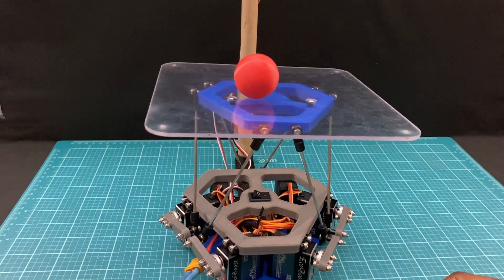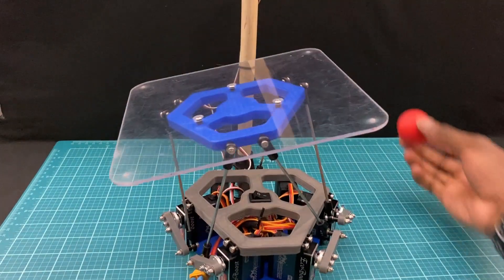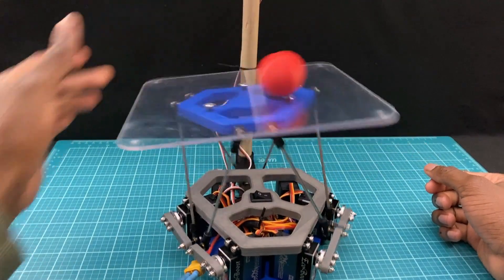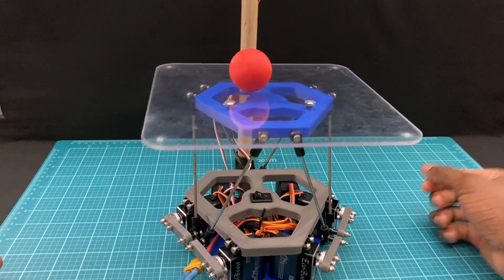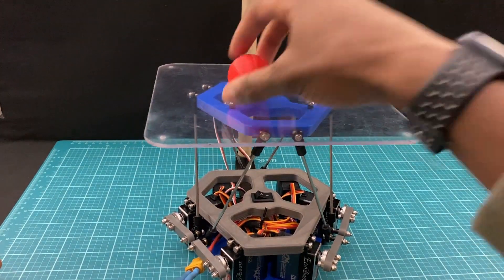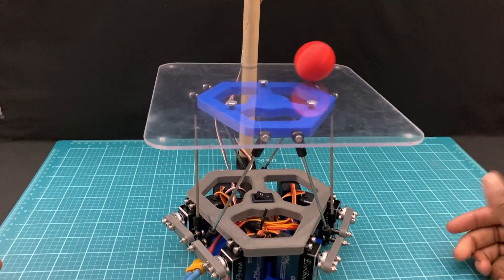This is a ball balancing robot or more formally known as a Stewart platform. It's an omni-rotational and omni-translational robot that's programmed to not let this ball fall. In this video I'll show you exactly how I made this robot from start to finish. Let's begin.